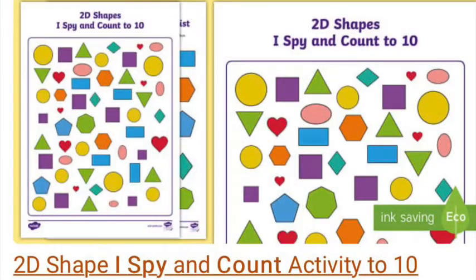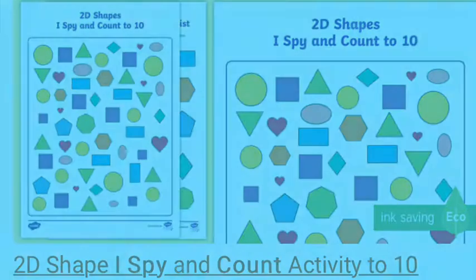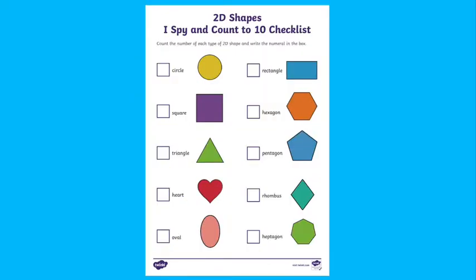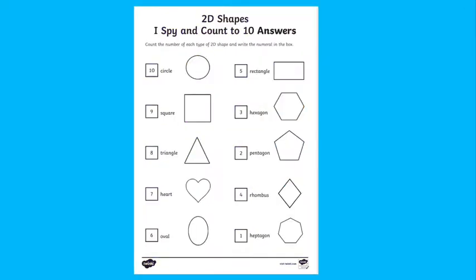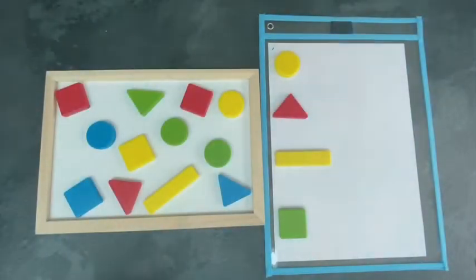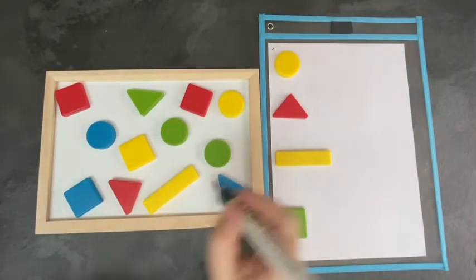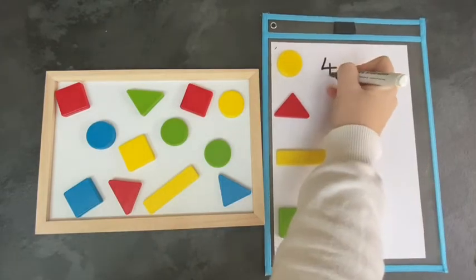Children can identify the different names of 2D shapes on this sheet and practise their counting skills. They count the number of each shape and then record the number in the box. They can even mark their own work using this answer sheet. Children could use 2D shapes to make their own I spy sheets for others.